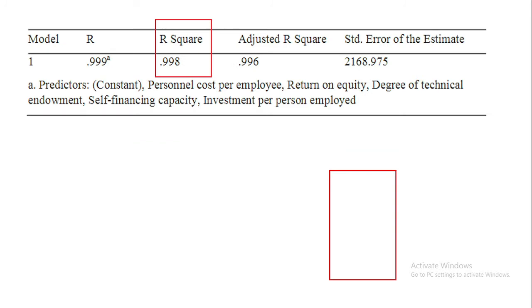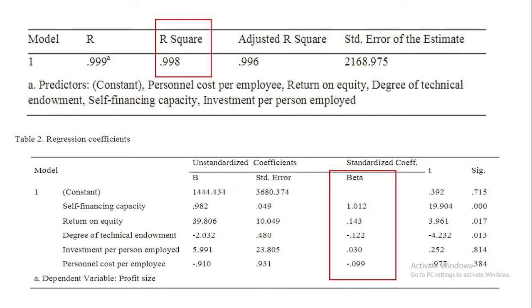For this particular model, the R-squared value is 0.998, that is 99.8 percent. Our beta values for the five individual independent variables have also been provided in the regression coefficients. So these are two tables: one table showing the value of R-squared, while the other — the regression coefficients table — is showing the value of beta.